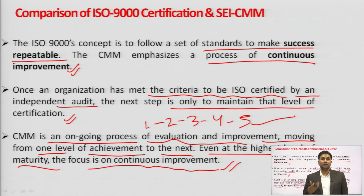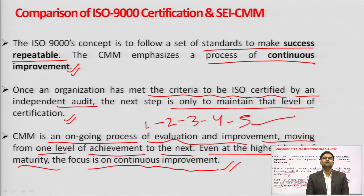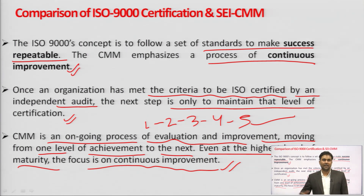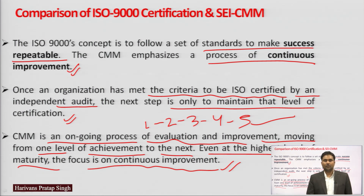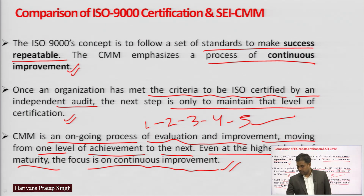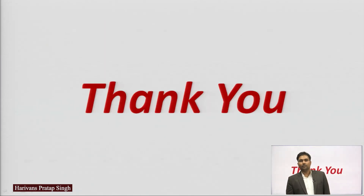Once an organization meets ISO certification criteria through an independent audit, the next step is only to maintain that level. But CMM is an ongoing process — move from level 1 to 2, then 3, 4, and 5 — continuously improving. CMM is only for the software industry for quality checking and standardization, but ISO 9000 covers a wide range of industries. Thank you.